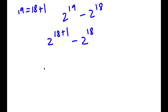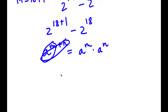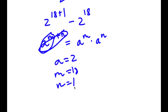Now an important property of exponents is that if I have something in the form a to the power of m plus n, this is equal to a to the power of m times a to the power of n — so this technically distributes. In this case, a would be 2, m would be 18, and n would be 1.